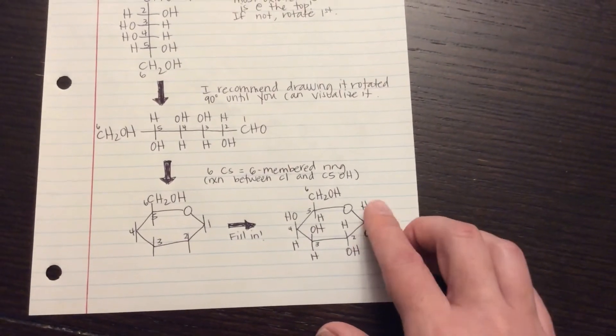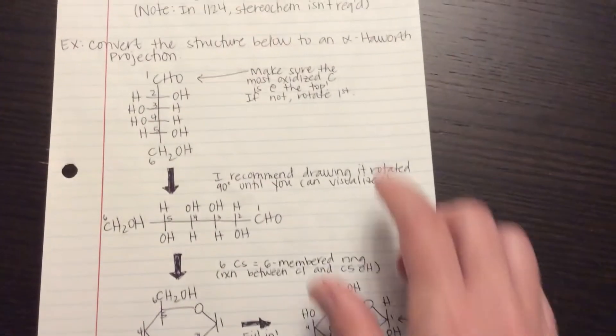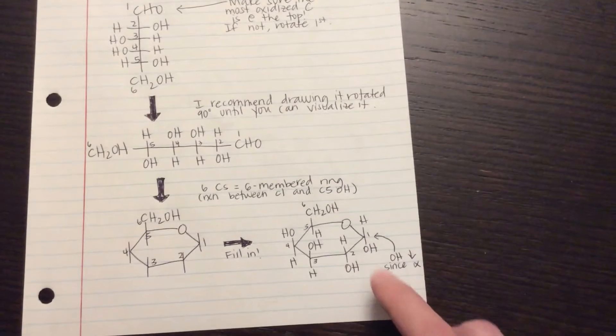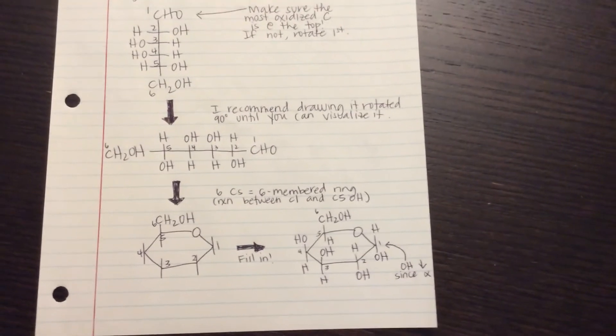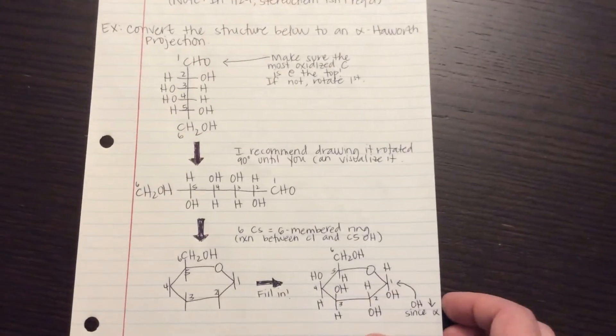Carbon 5 is only going to have a hydrogen left on it because that O is now right there. And then how do I know what goes on carbon number 1? Well, the problem told me I wanted it in the alpha configuration, which means that the OH is down. So that's my alpha Haworth projection.